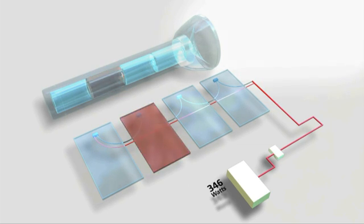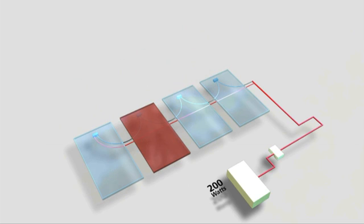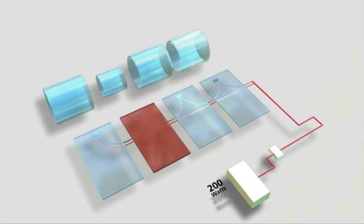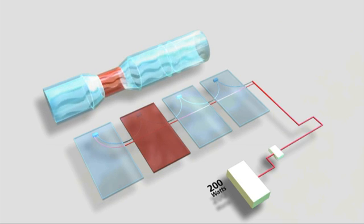when one module underperforms, it not only outputs less, it also drags down the other modules in the string. You can think of solar modules as pipes. Perfect modules have a larger pipe. Underperforming modules have a smaller pipe. When connected together, the small pipe constricts the flow of energy through the array and loses power by heating up the module. This can result in significant power losses and panel damage.